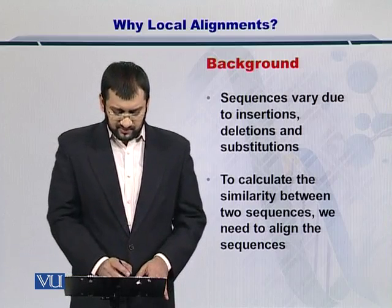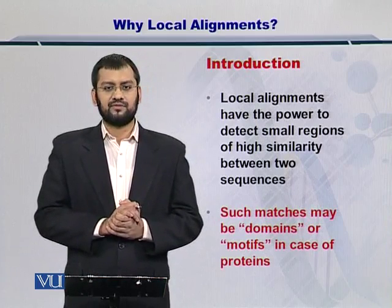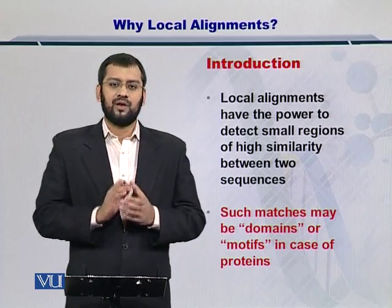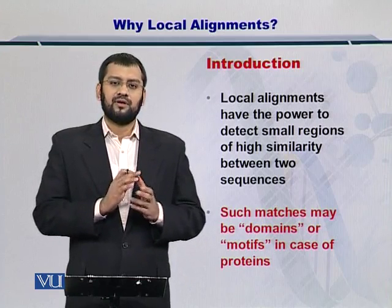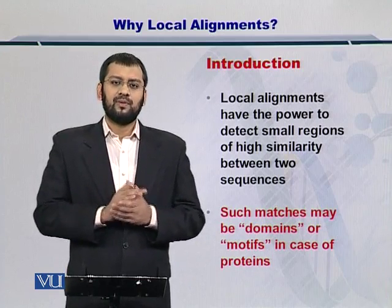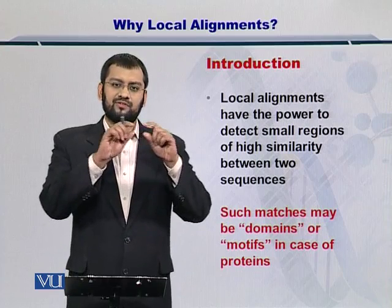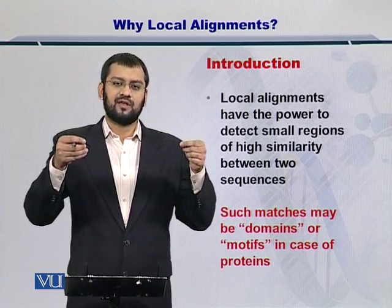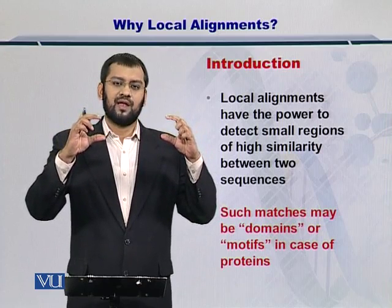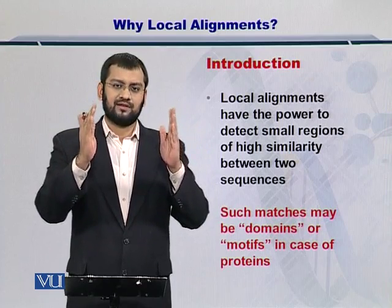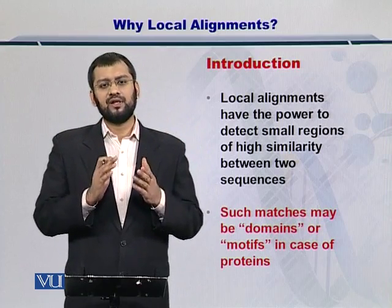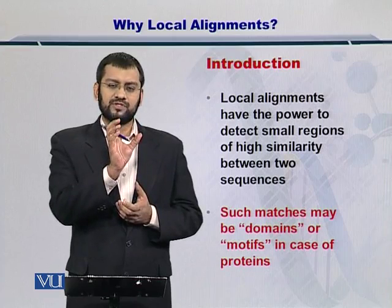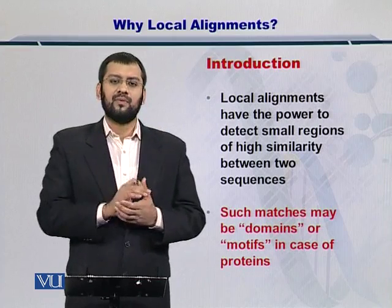To calculate this similarity we go about aligning the sequences. Local alignments are very powerful as compared to global alignment. In global alignment, we had one sequence on top and a smaller sequence on the bottom, and we try to stretch the smaller sequence so that the two sequences became aligned with their start and end at the same position. In local alignments we don't do that — we try to compare that portion of the smaller sequence as it is with the bigger sequence.